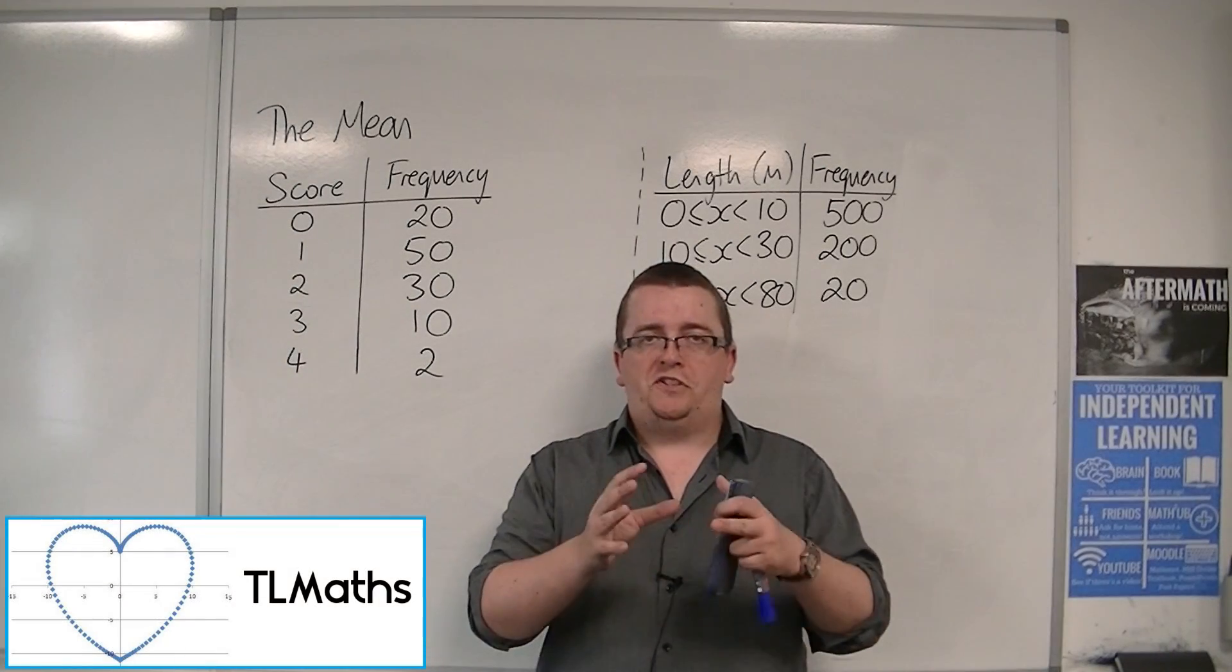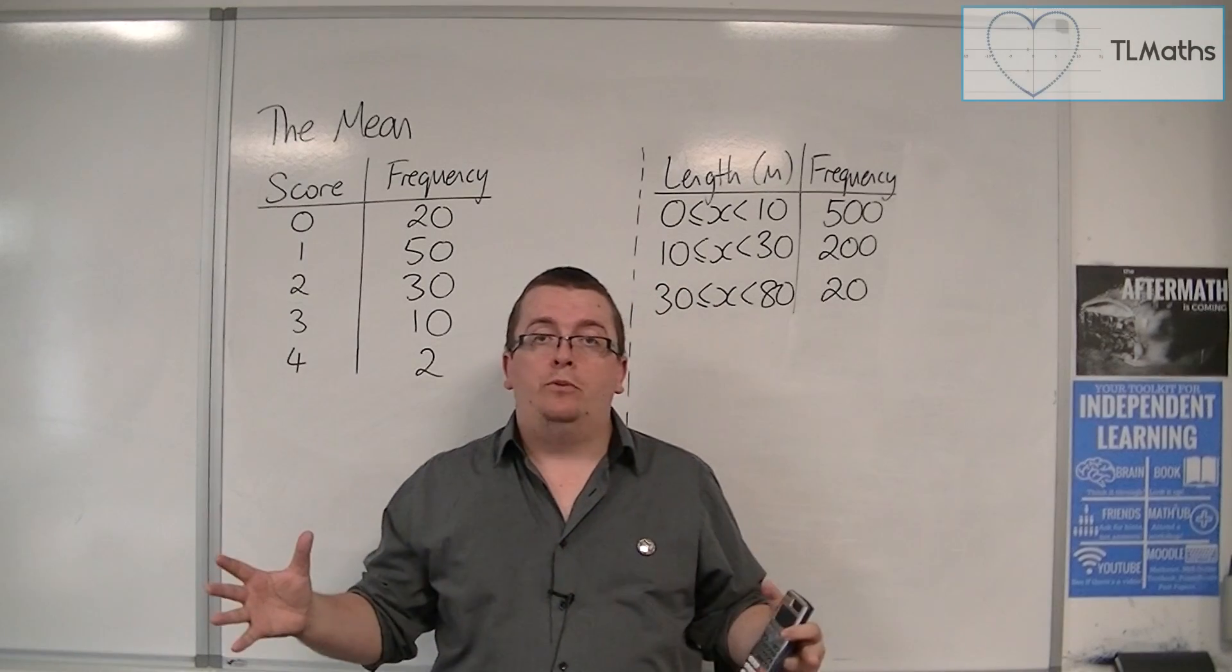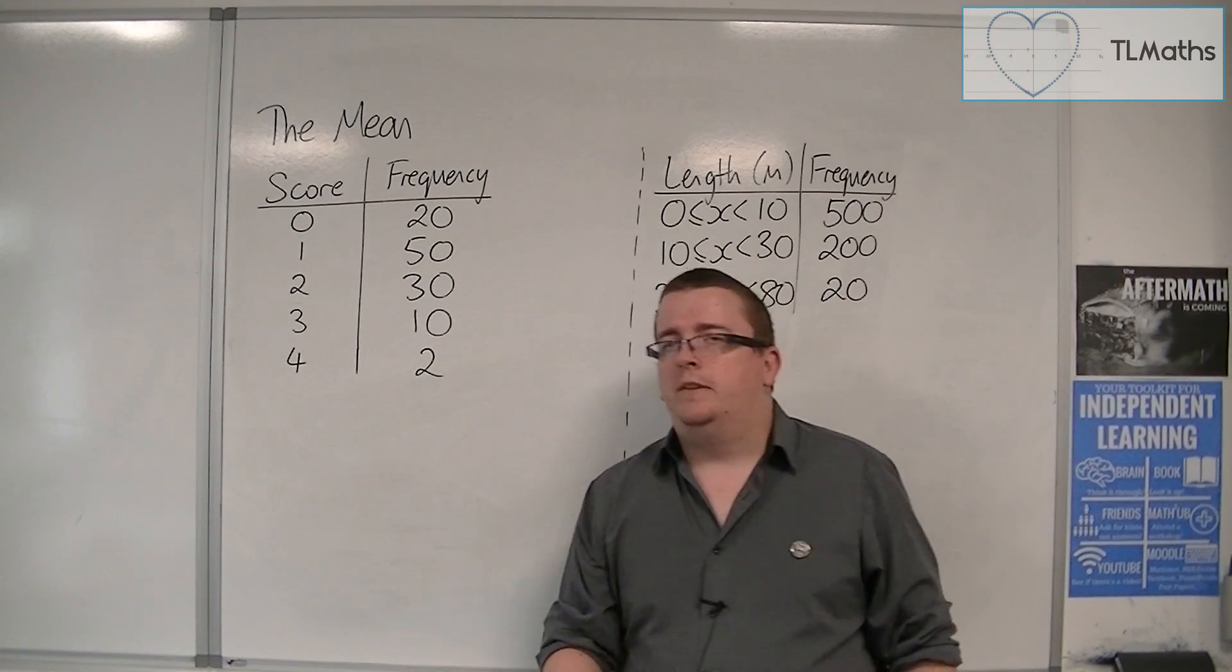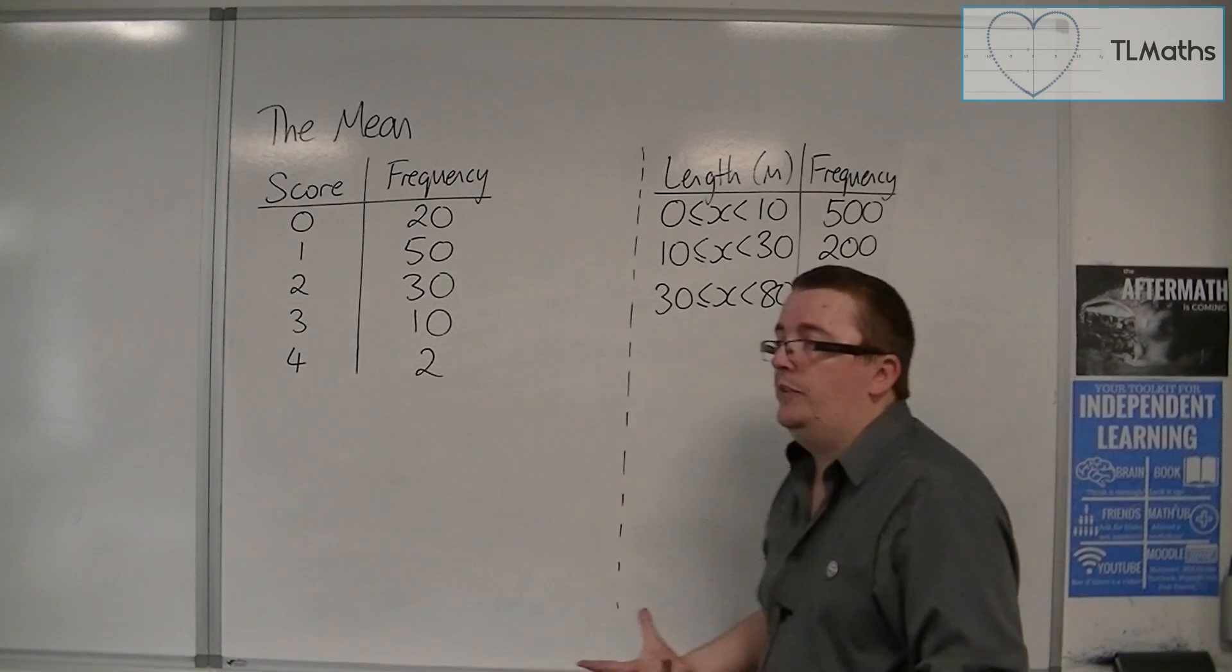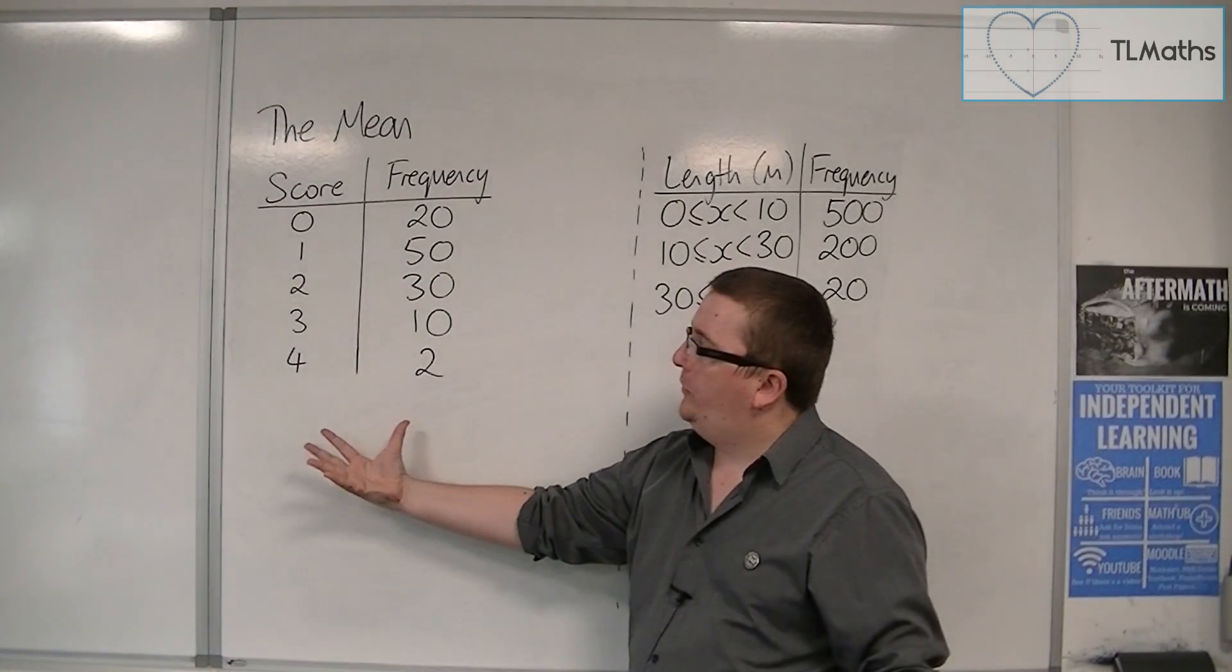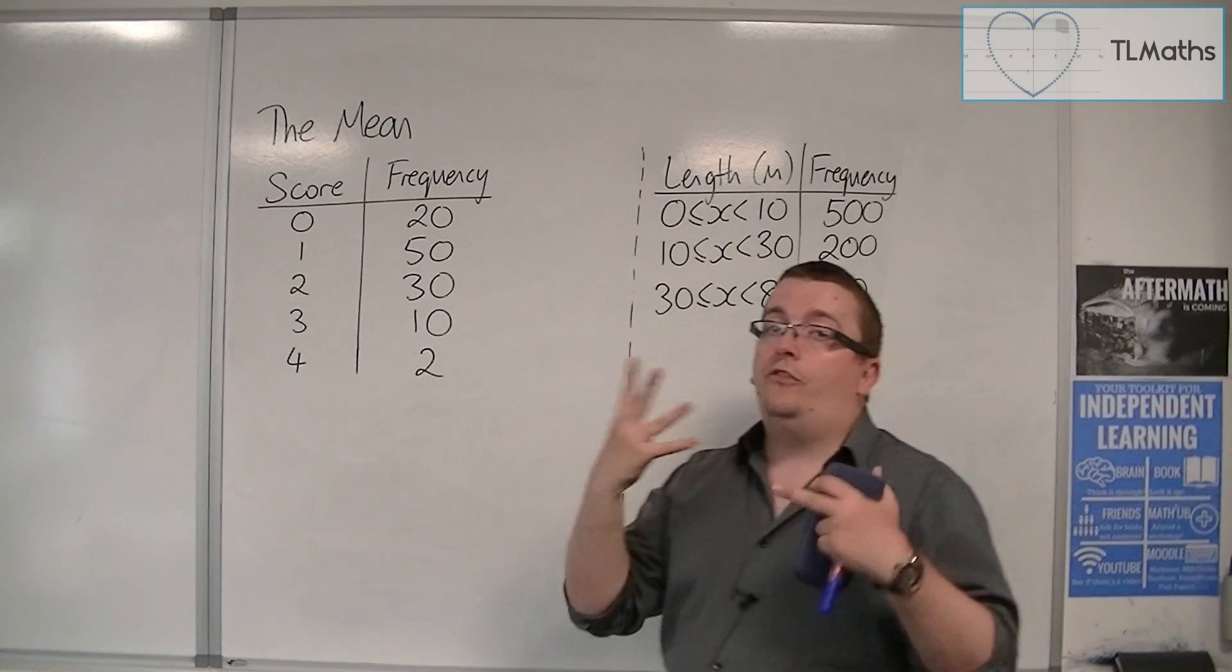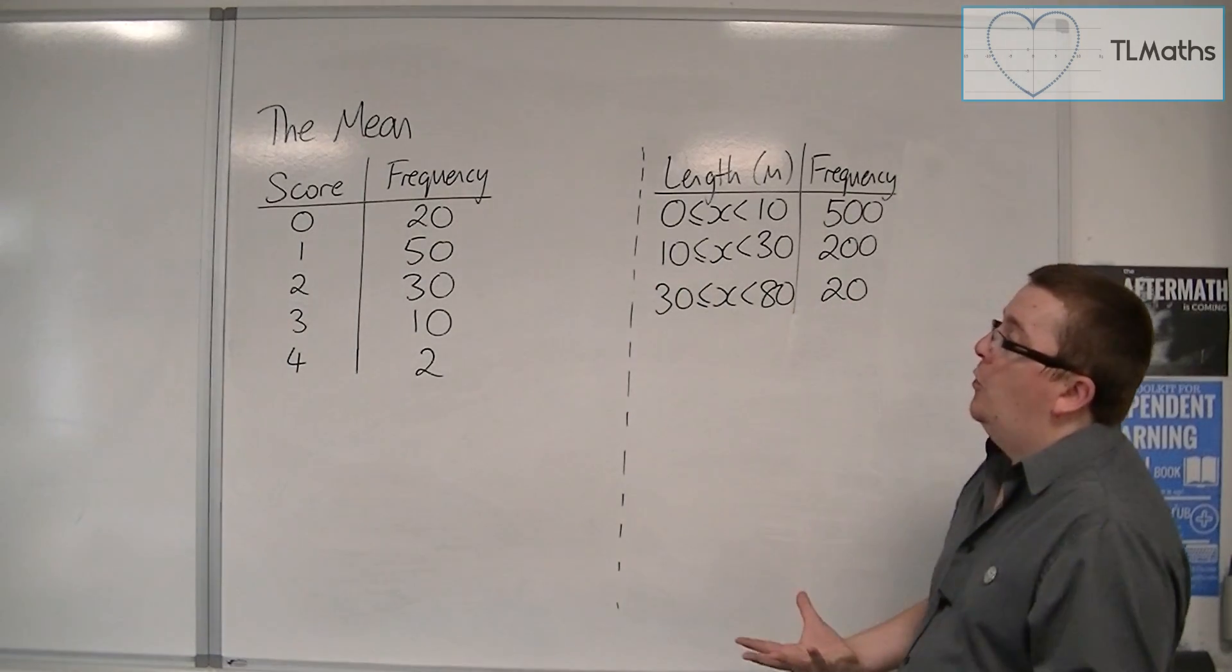Calculating the mean of just a raw set of numbers, so 10 numbers for example, is pretty straightforward. You add them all together, you divide by how many there are. If however the data is represented in a frequency table, either as a more common frequency table like this, or a grouped frequency table, then we need to find a way of actually calculating the mean in an easier way.